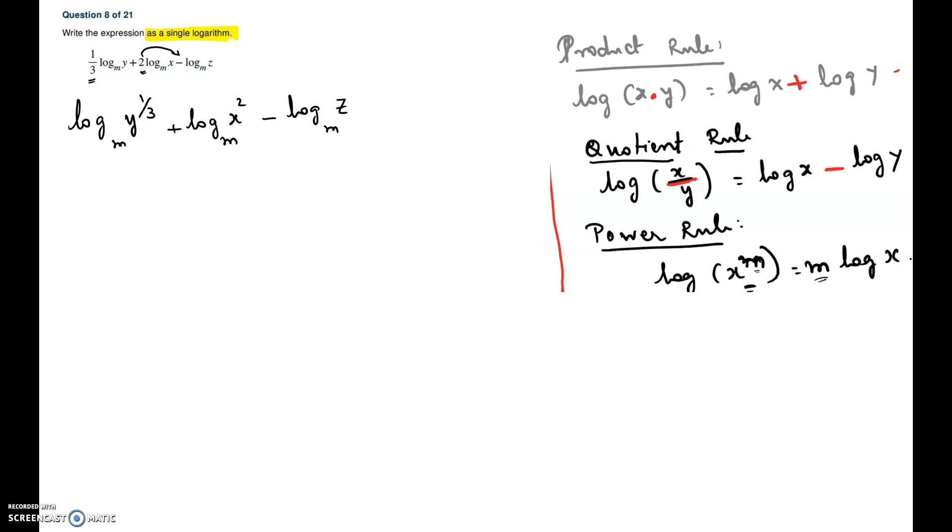Now, for the first two terms, we notice that they are connected by a plus sign. If you see a plus sign, in order to make two logs into one log, we can use the product rule. By using product rule for these two, we get log of the first times the second with the same base m, minus log z to the base m. We will keep the third term as is.